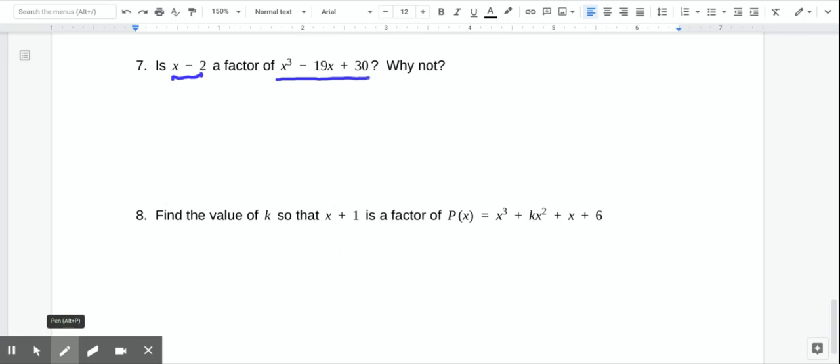I'm going to go back and use synthetic division. So we're going to put positive 2 in the box. And then my coefficients are 1x cubed, 0x squared, negative 19, and 30. All right, so we'll do synthetic division. Drop that. We're going to multiply and add, multiply and add, multiply and add.